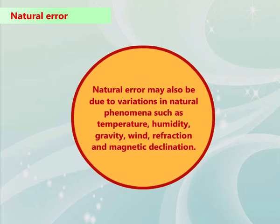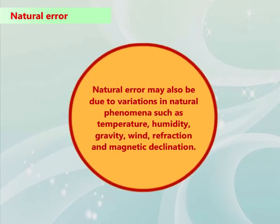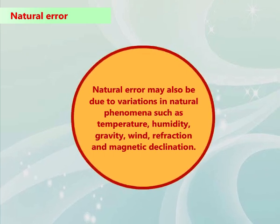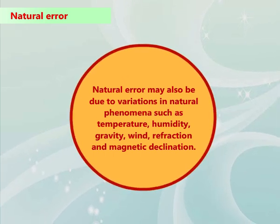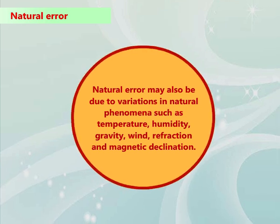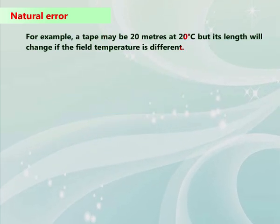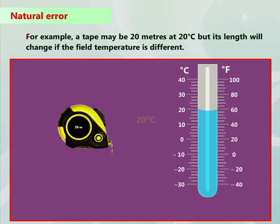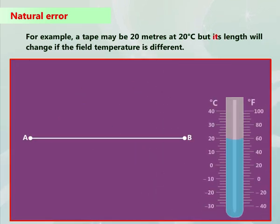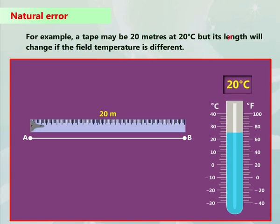Natural error may also be due to variations in natural phenomena such as temperature, humidity, gravity, wind, refraction, and magnetic declination. For example, a tape may be 20 meters at 20 degrees Celsius, but its length will change if the field temperature is different.